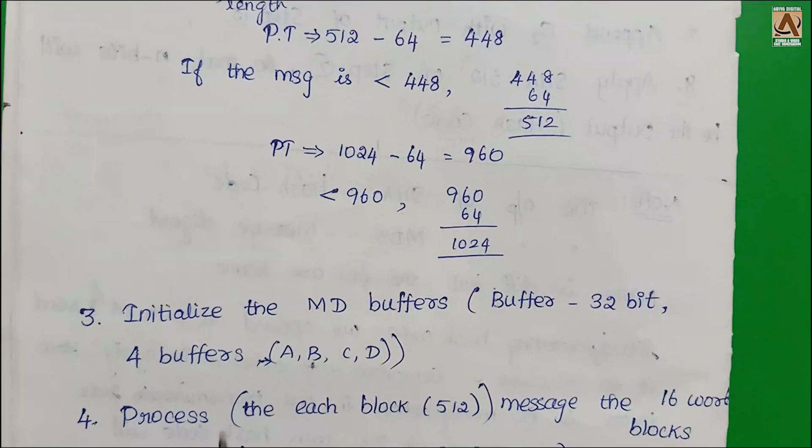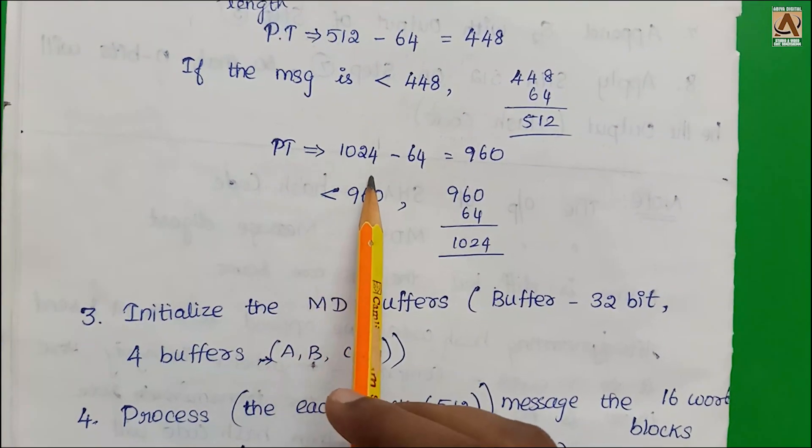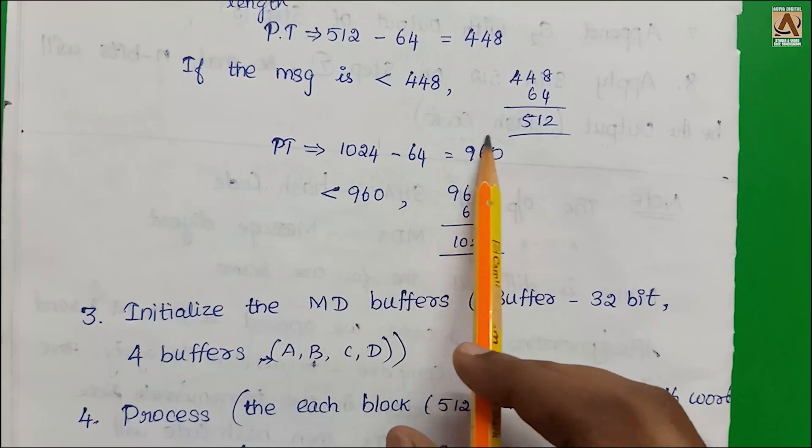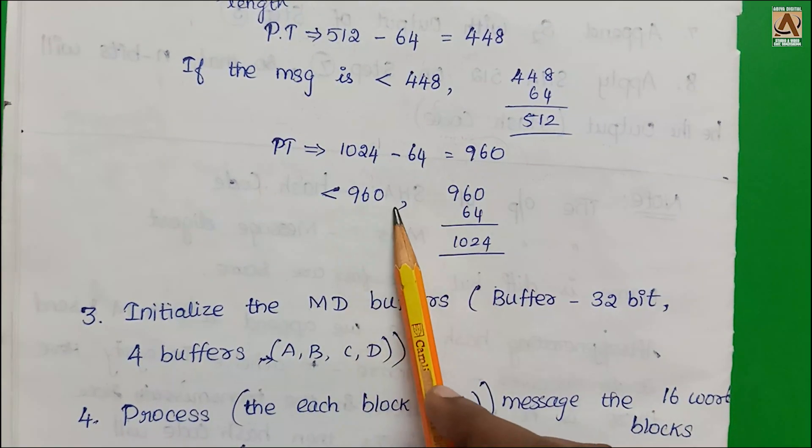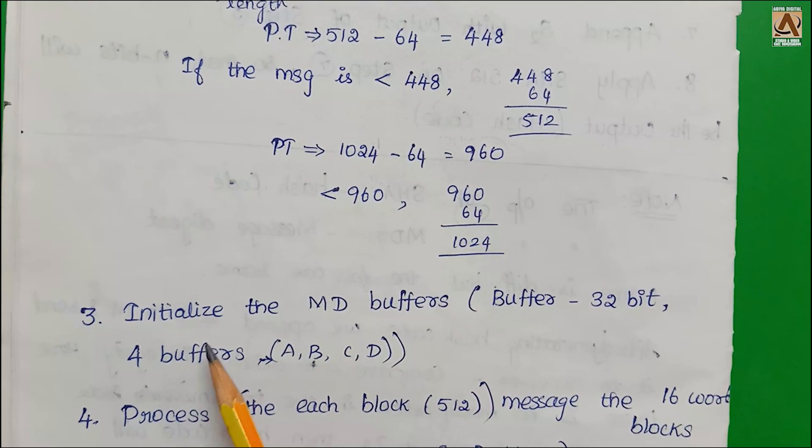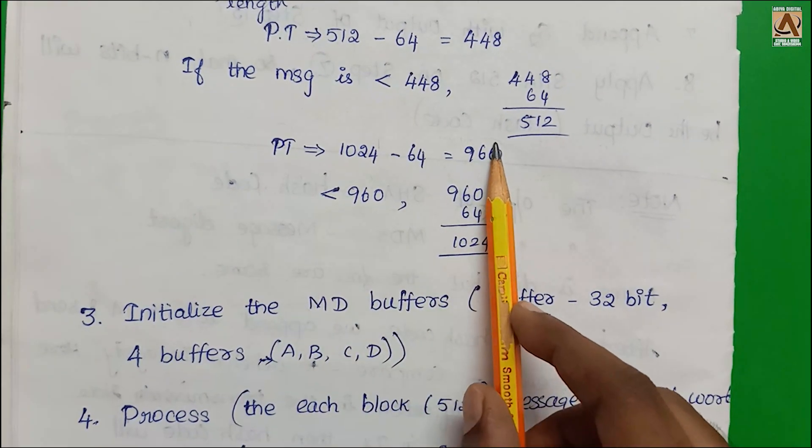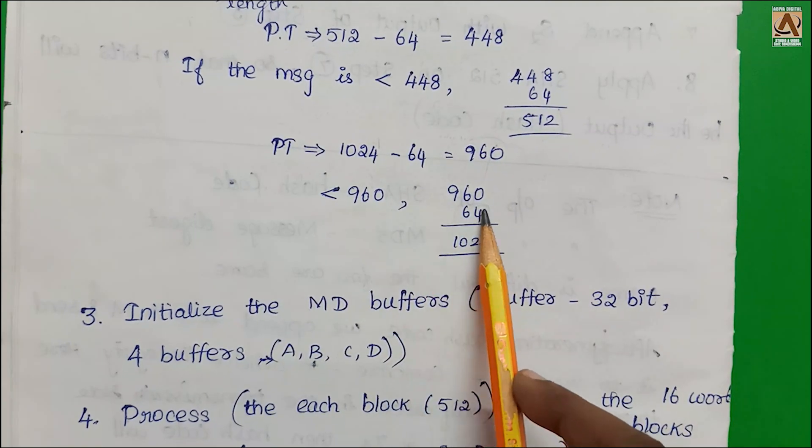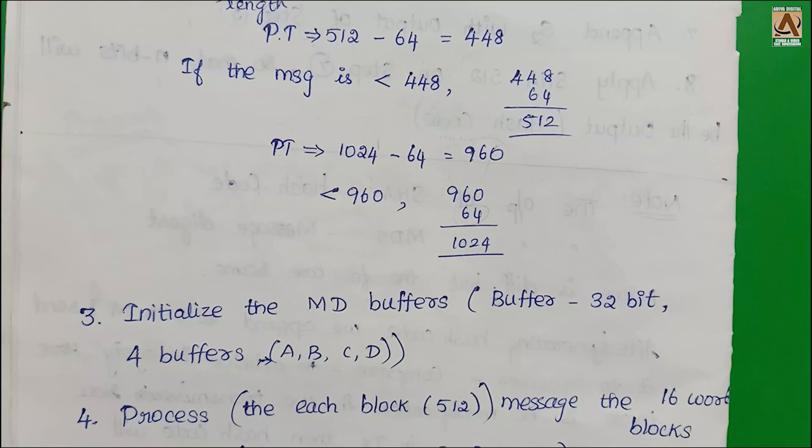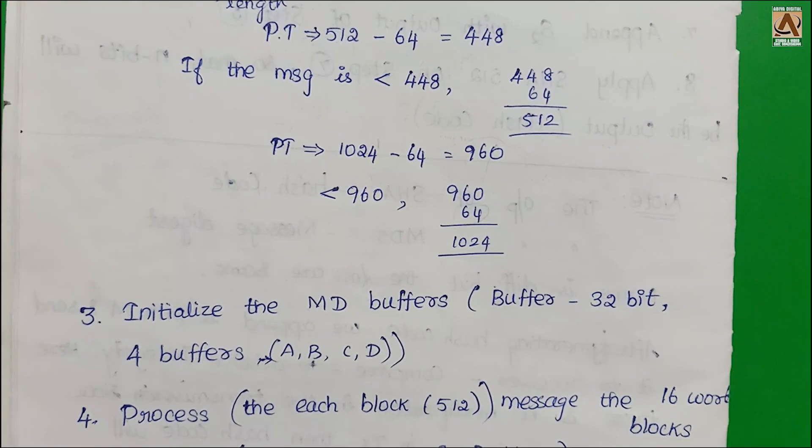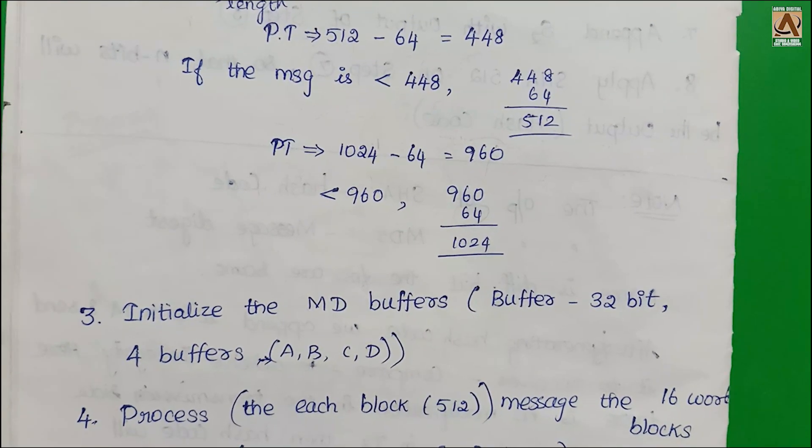For example, plaintext of 1024 bits minus 64 equals 960 bits. If less than 960, we add 64 bits. If 961 bits, we add 63 bits. These are important sources.